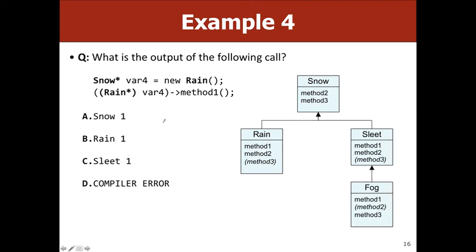Now let's move on to a casting example. We have Snow* pointing to new Rain, but we cast it as Rain*. Our declared type is snow, initialized type is rain, cast type is rain. Does rain have a method1? Yes. Is rain a subclass or the same class as rain? Yes. So we call method1 on the initialized type — rain's method1, which prints 'rain 1'.